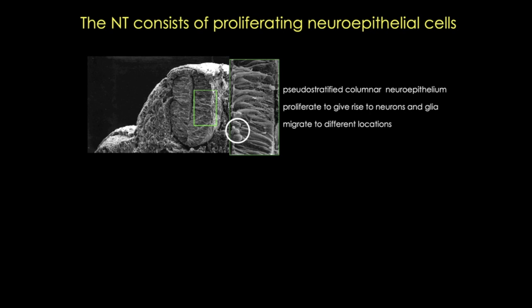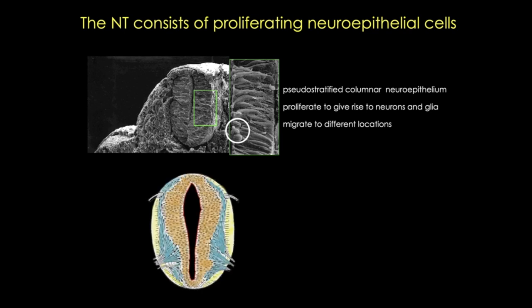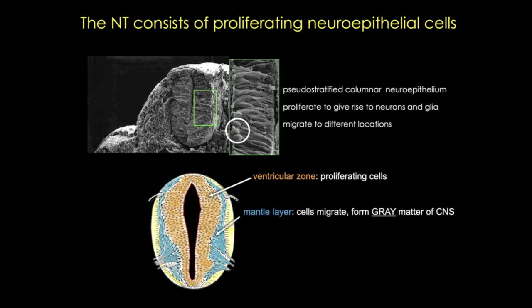These cells will divide and migrate to different locations in the CNS. In a cross-section of the neural tube, the ventricular zone in orange contains the proliferating cells that will form neurons and glia. Those cells migrate from the ventricular zone to the mantle zone as neuroblasts — your primordial neurons — forming the gray matter of the CNS, including the neuronal and glial cell bodies. The marginal zone in yellow represents the axons of cells in the mantle layer, forming the white matter of the CNS.